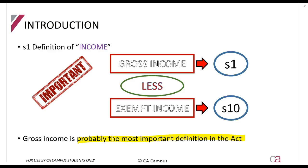Gross income pops up in various ways in tests and exams. It can either be asked as a discussion type question — here's an event, discuss whether or not it is gross income — to illustrate that you understand the theory and could give someone advice. The other way, and by far the most common, is by giving you amounts in calculations. Every single time you include an amount in your calculation, you're actually applying the gross income definition.